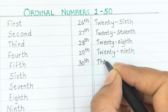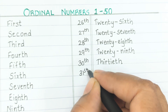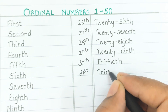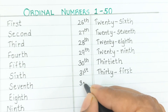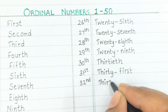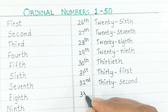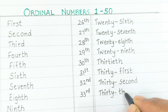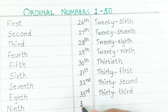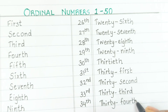Thirtieth: T-H-I-R-T-I-E-T-H. Thirty-first: T-H-I-R-T-Y-F-I-R-S-T. Thirty-second: T-H-I-R-T-Y-S-E-C-O-N-D. Thirty-third: T-H-I-R-T-Y-T-H-I-R-D. Thirty-fourth: T-H-I-R-T-Y-F-O-U-R-T-H.